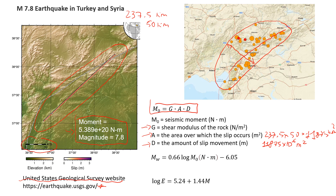Now for the slip — there is a separate color scale showing the slip amount, where the darker color represents the largest slip, up to three meters. From my estimation, the slip ranges from about one to three meters, but mostly two to three meters. So for my rough estimation, I'll set D equal to 2.5 meters, though you could use two or three meters as well.